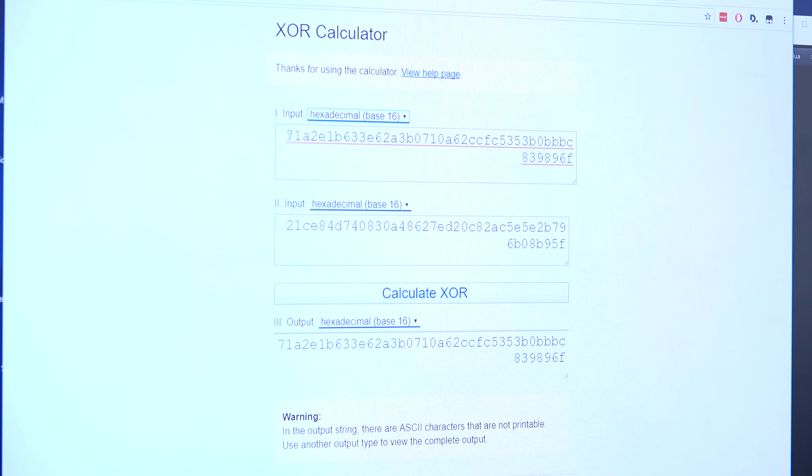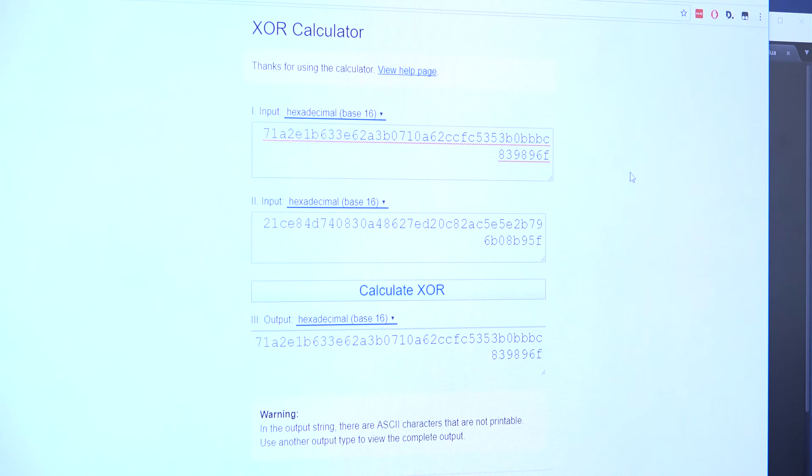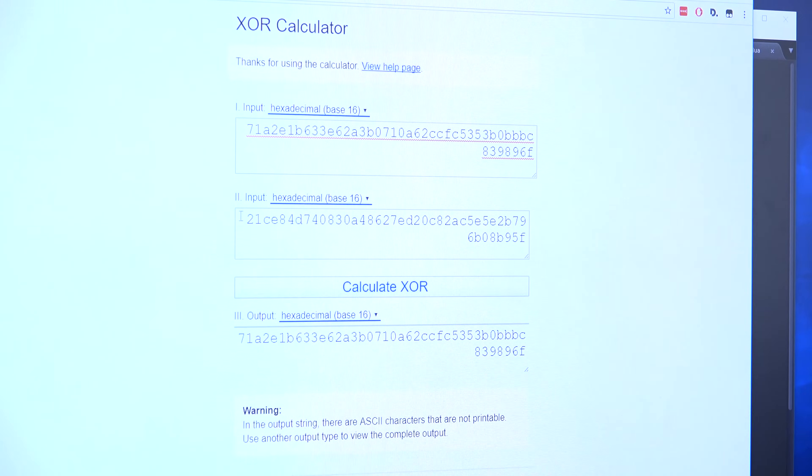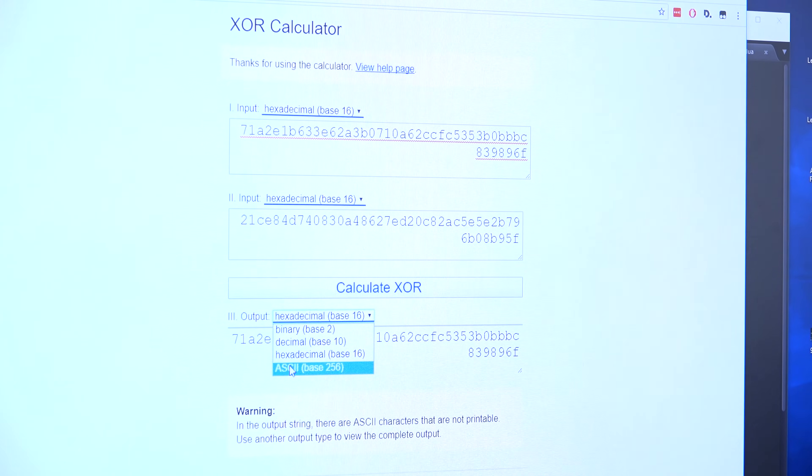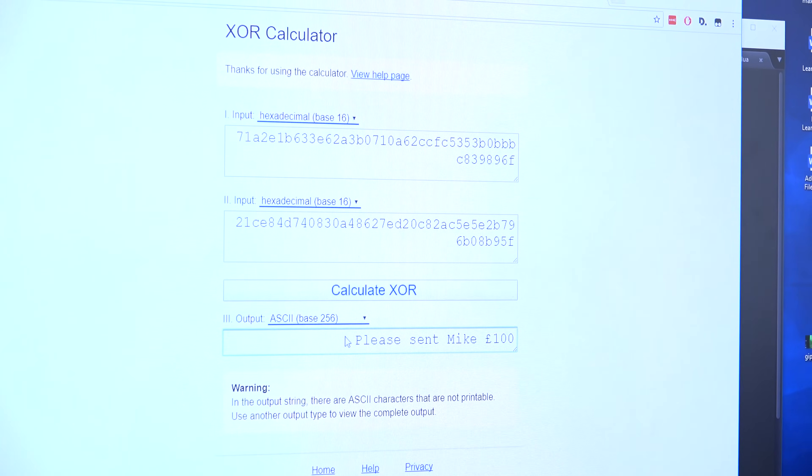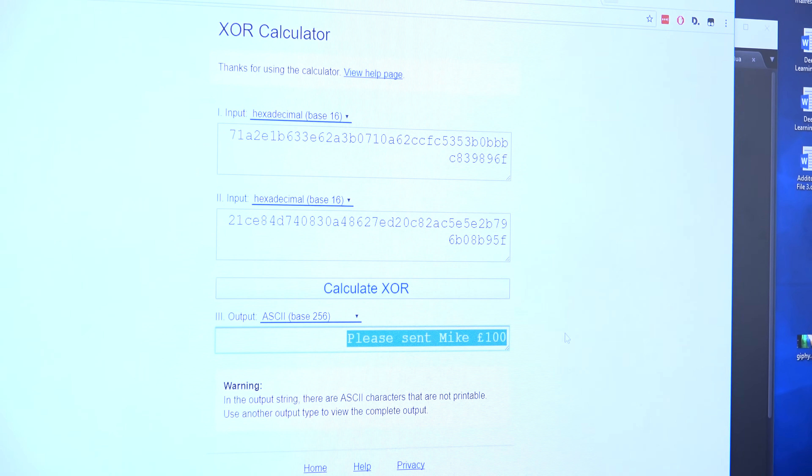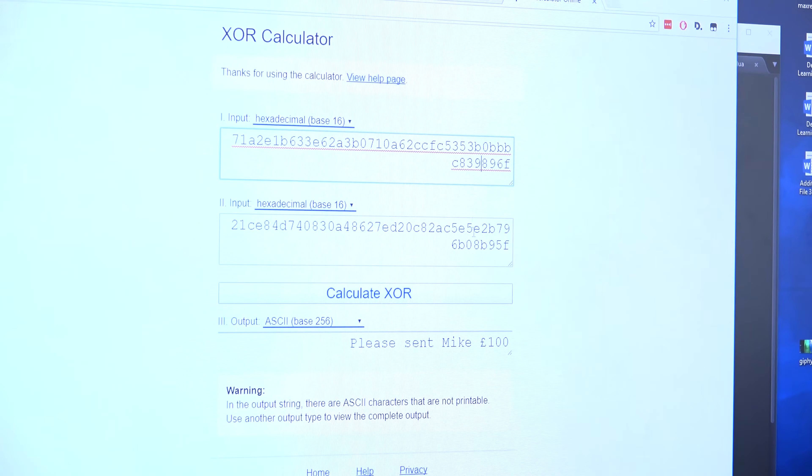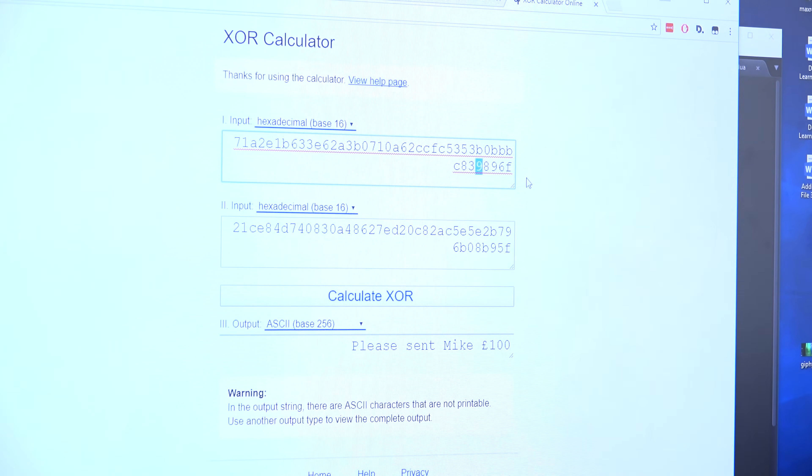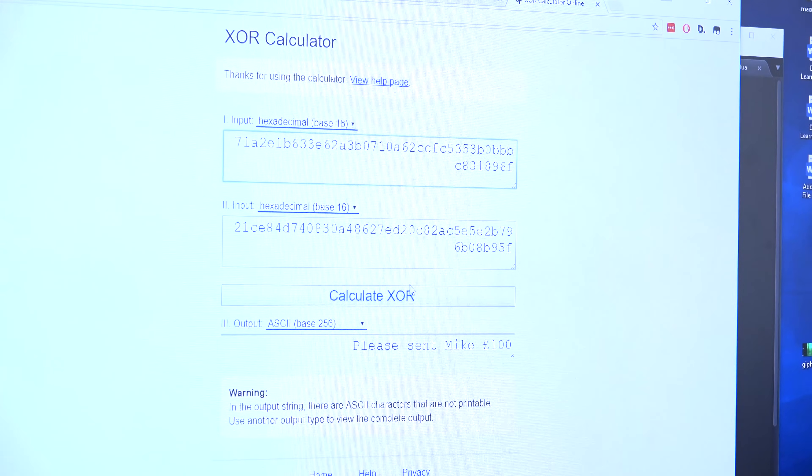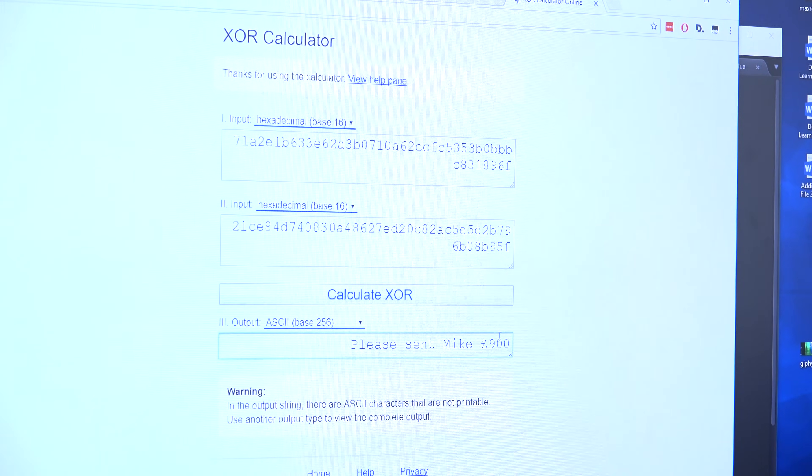If I put my encoded hex in my input, the key stays the same, and we calculate the XOR, you can see that we've decrypted to 'please send Mike a hundred pounds.' But if I flip—so these bytes here correspond to a byte of this ASCII. If I change this to a 31 and then I calculate the XOR on it, I'm suddenly being sent 900 pounds. That's a huge problem.